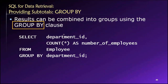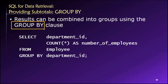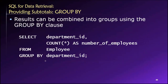What GROUP BY does is rather than producing something like an overall sum, overall average, overall minimum, maximum, or standard deviation, the GROUP BY allows us to compute subtotals by groups or by categories. So for example, if I wanted to know how many employees work in each department, I could ask the database to answer that question with just one single SELECT statement, similar to what we see here, and it introduces this new concept of a GROUP BY. Let's take a look and see if we can start to build an intuitive understanding of what is happening.